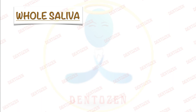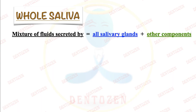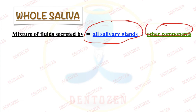In our mouth, the saliva comes from the salivary glands. But with it, there are many things in the mouth, so it gets mixed with it and we call it whole saliva. Whole saliva is a mixture of the fluids secreted by all the salivary glands, major and minor, and other components.